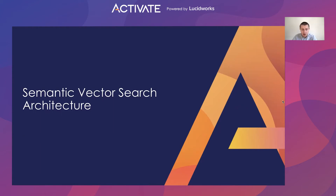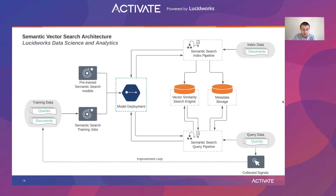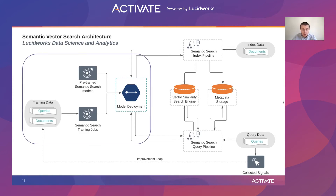Now let's take a look at how semantic vector search can be implemented in production, using the high-level architecture of what we built at Lucidworks. On the modeling side, we have general pre-trained encoders that can be used right out of the box for cold start scenarios. We also have a custom training pipeline that allows us to train encoders on customers' domain-specific data to achieve even better personalized vector search results. Training sets can be built from customers' existing data like FAQ pairs or call center logs, as well as from collected search signals like user search interactions with products.